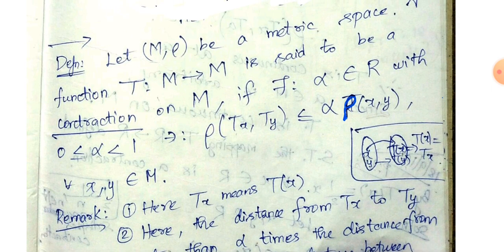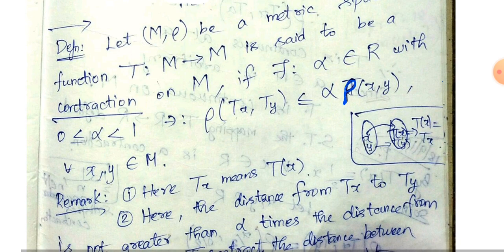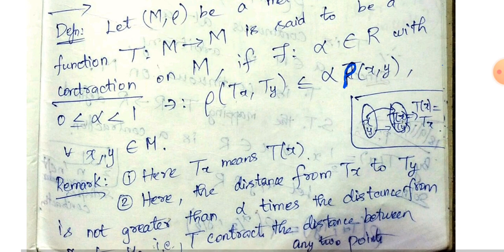The element ρ(Tx) is the metric value — ρ is the metric. The distance is less than or equal to some α times the metric between x and y. This function T is called a contraction, and the diagram will tell you more.